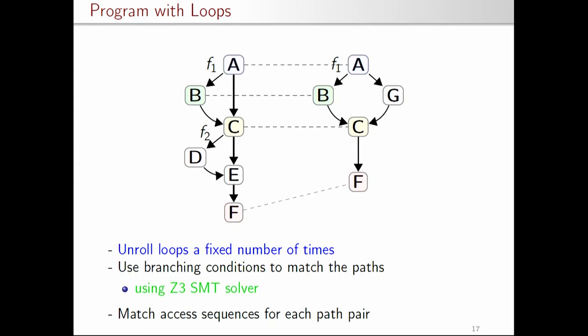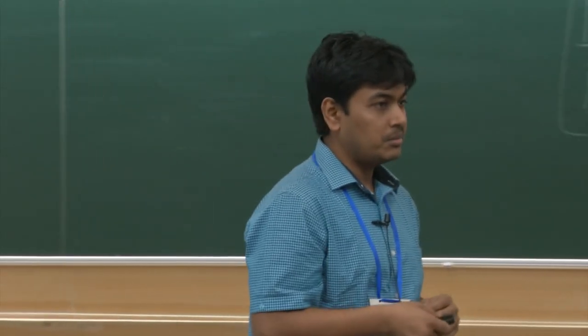When the program has a loop, we unroll the loop bodies for a fixed number of times and then perform the same path-pair finding and access sequence matching analysis. Of course, with loops this approach is not fully sound since I am only doing a finite number of unrollings — but since translation validation in the presence of loops is undecidable, I resort to this unsound but bug-finding approach.